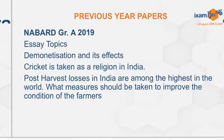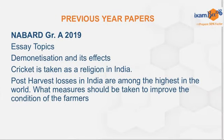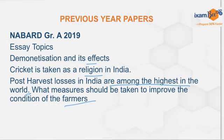In 2019, the essay topics were: demonetization and its effects; cricket is taken as a religion in India; post-harvest losses in India are among the highest in the world — what measures should be taken to improve the condition of the farmers? In 2019, there were also four questions: essay, précis, RC, and letter or report.